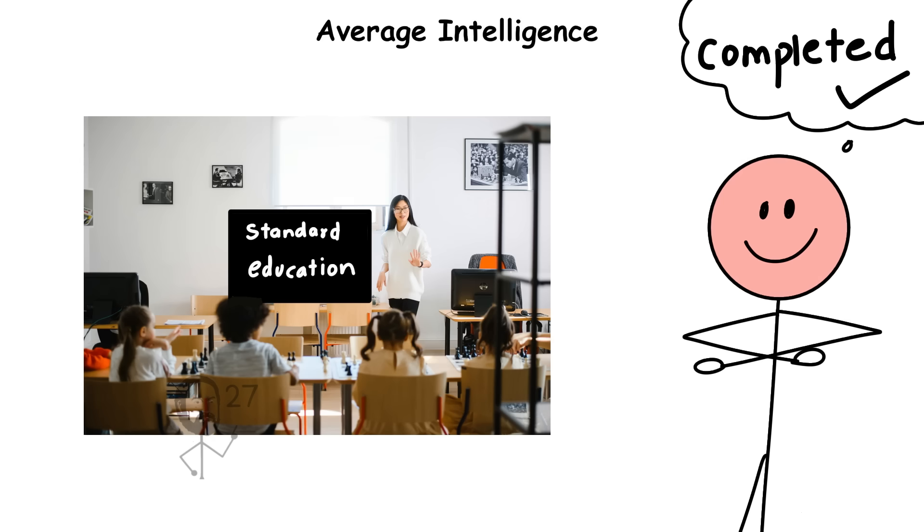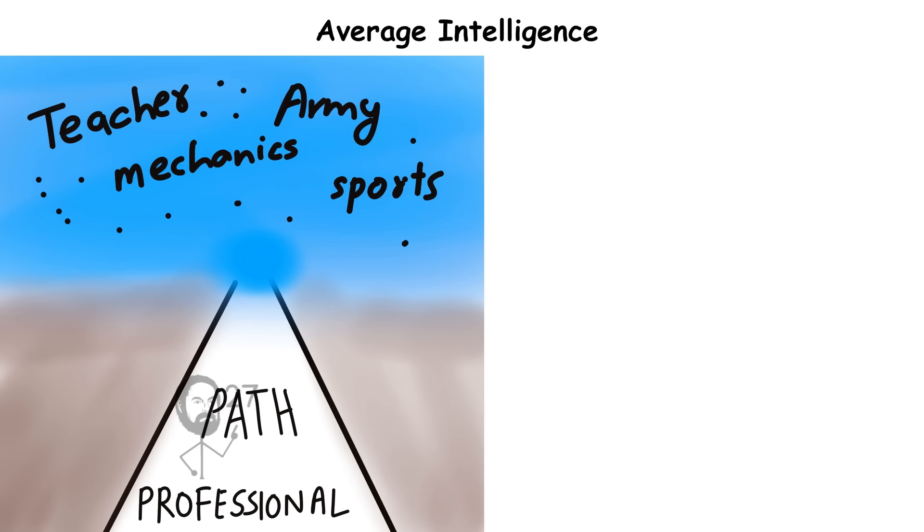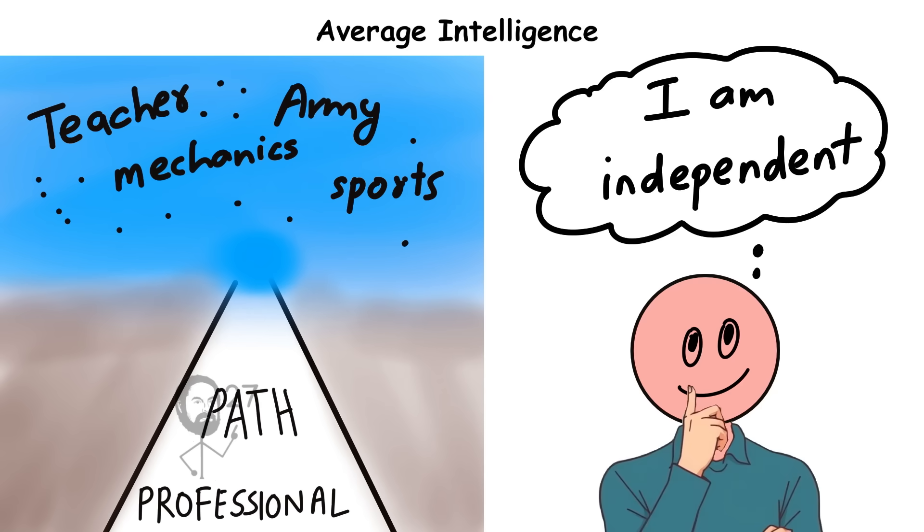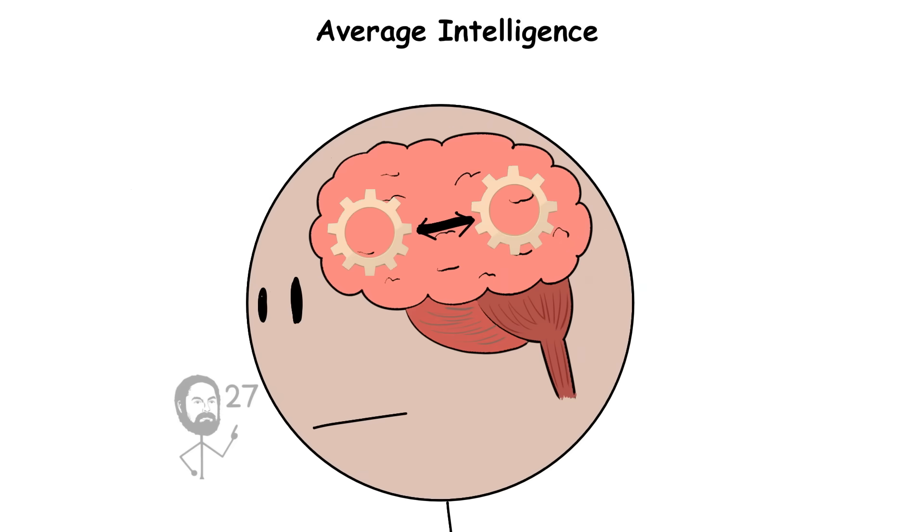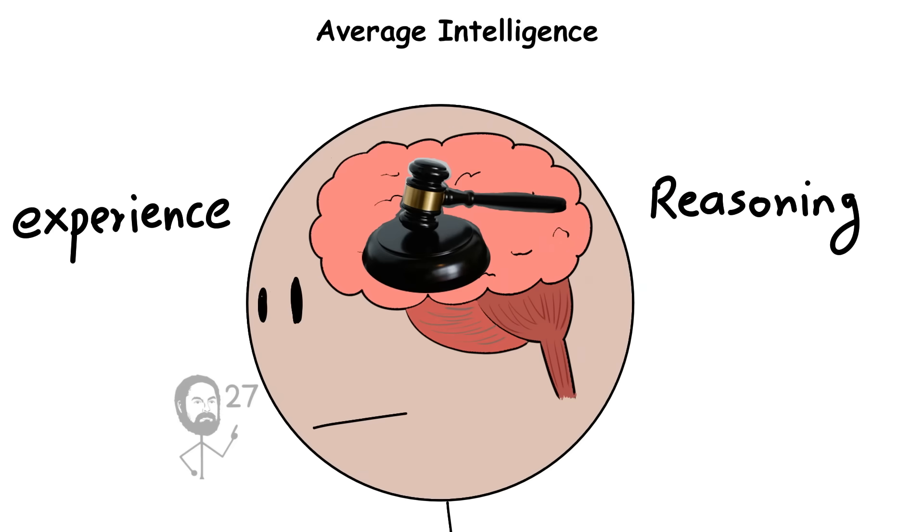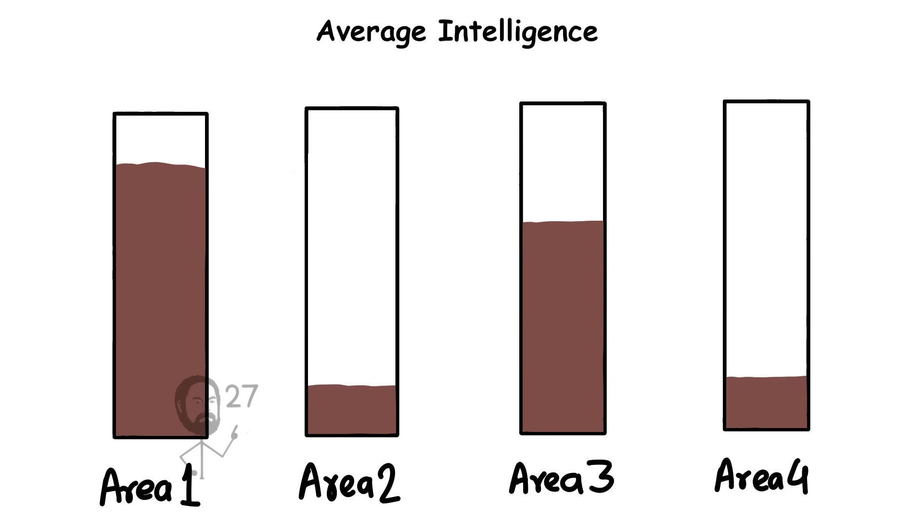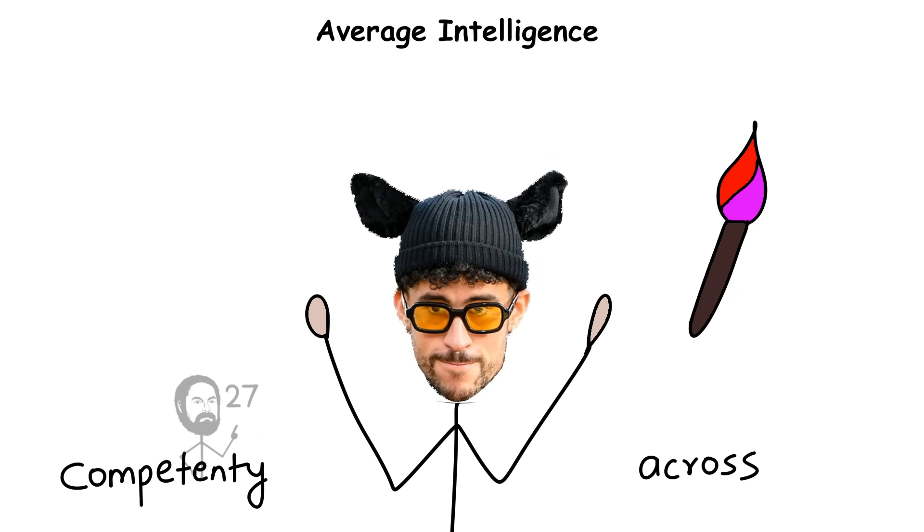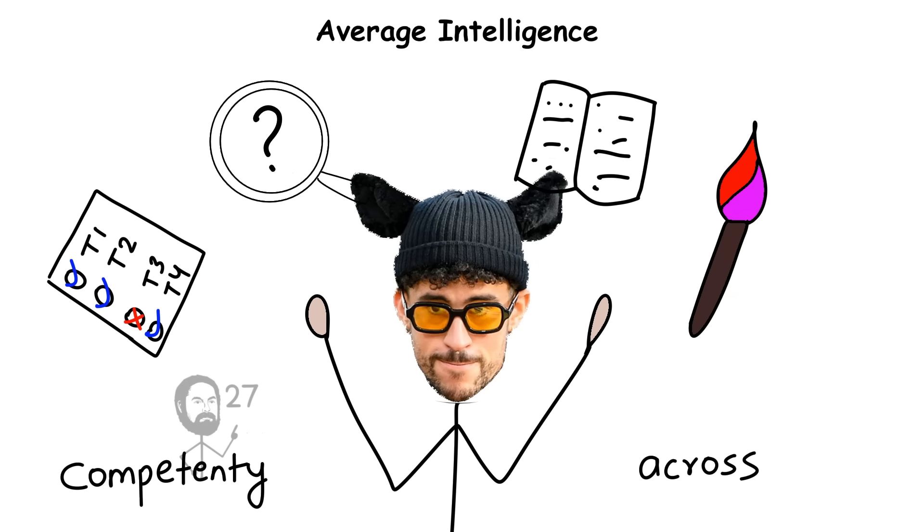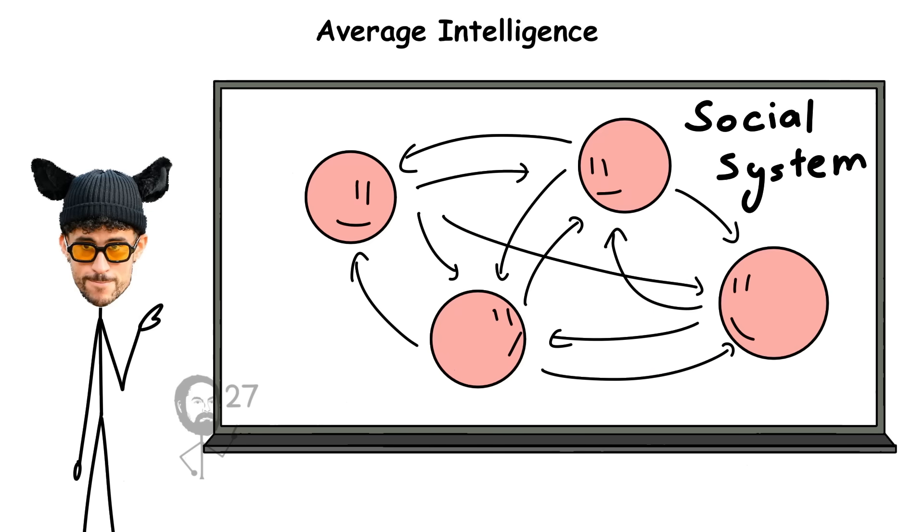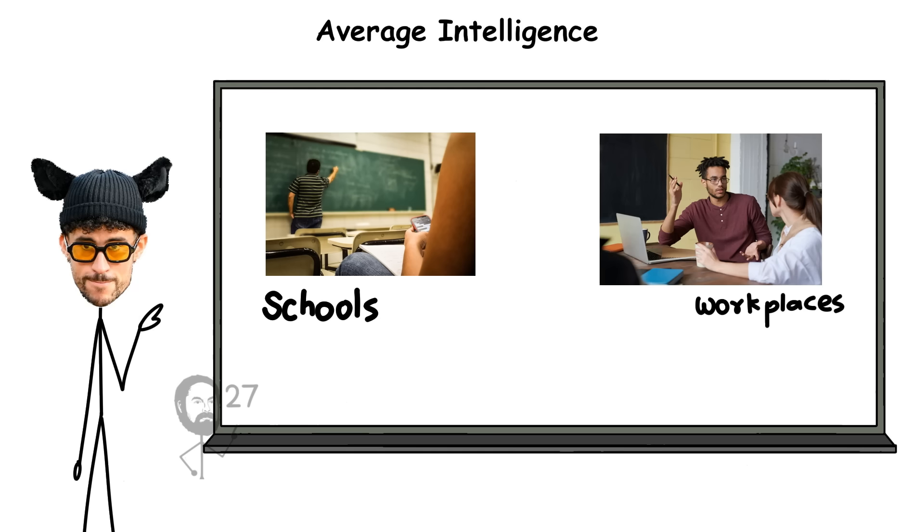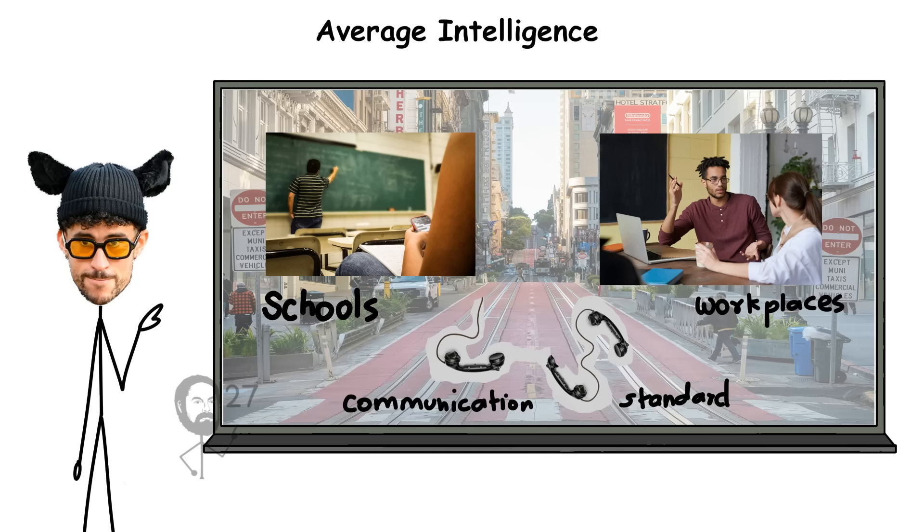These individuals can complete standard education, pursue most professional paths, and function independently in nearly all aspects of life. They can interpret social cues, make logical connections, and form judgments based on experience and reasoning. While not necessarily excelling in all areas, they typically perform competently across a broad range of intellectual tasks. Because this range represents the norm, it defines what most social systems, schools, workplaces, and communication standards are built around.